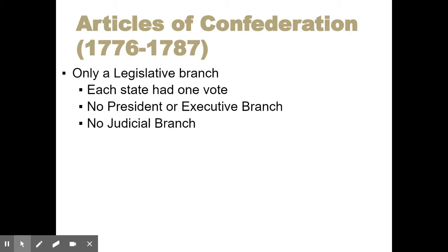There's also no judicial branch — no national judicial branch, no Supreme Court system. Every one of the 13 states has their own court system, but there's not a national independent court system.